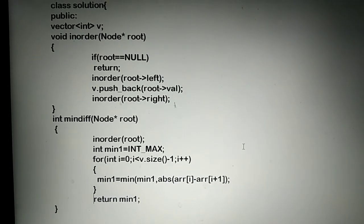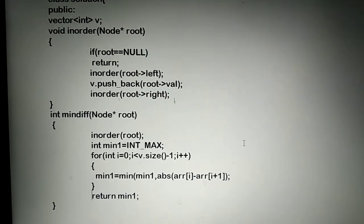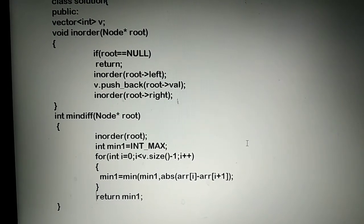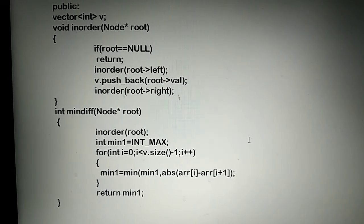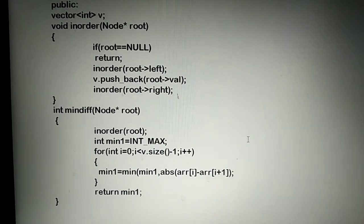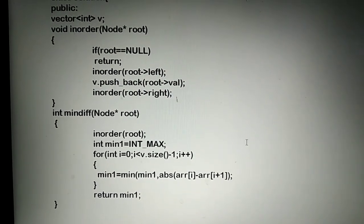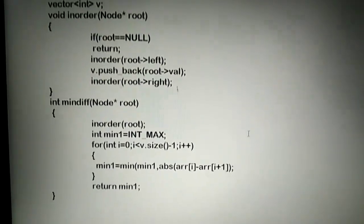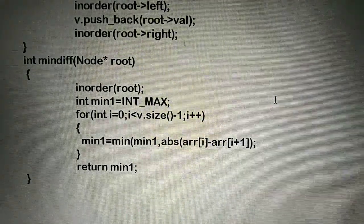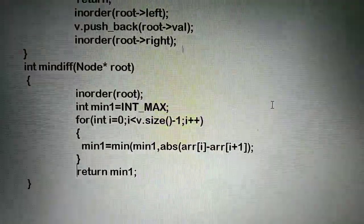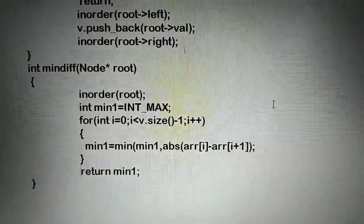Now we return to the minimum difference function. You can see there is a loop running: for i equals 0, i less than v.size() minus 1, i plus plus. Here I have created a minimum variable which stores the maximum value of an integer. While running through the loop,